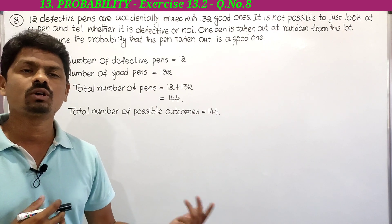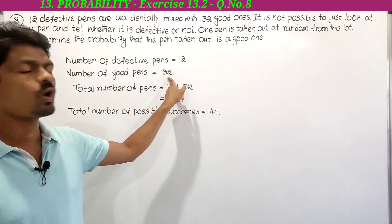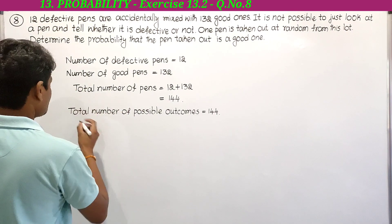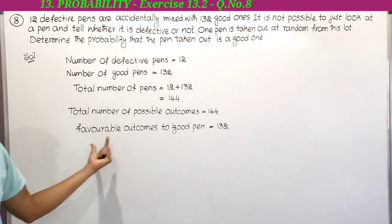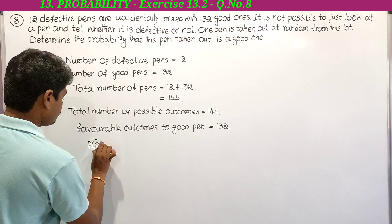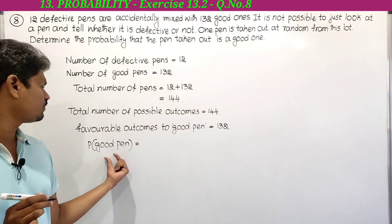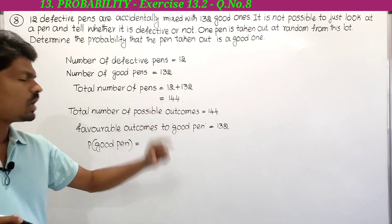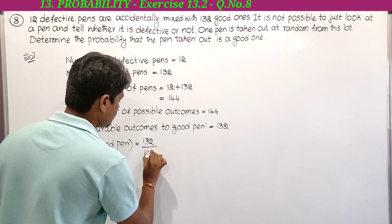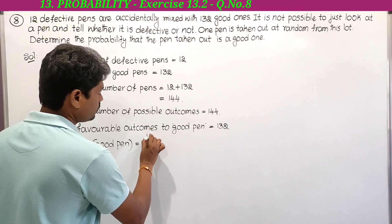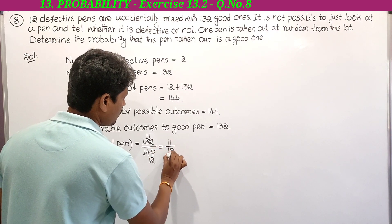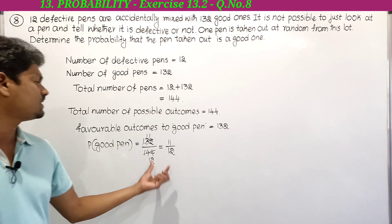We need to find the favorable outcomes for the good pen. How many good pens are there? 132 good pens. So favorable outcomes for the event good pen is 132. Probability of good pen equals favorable outcomes divided by total possible outcomes, which is 132 divided by 144. 12 is the common factor, so it simplifies to 11 by 12.